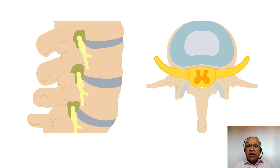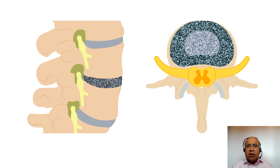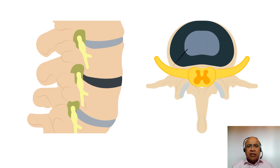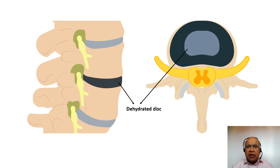Sometimes, for various reasons, the disc suffers failure and becomes dehydrated. Good discs have the ability to attract water and are well hydrated. A disc that has failed loses that ability, and the water content becomes less — this is called a dehydrated disc, or sometimes a degenerate disc. The term 'degenerate' may not be ideal, as it implies old age, but even young people can have dehydrated discs. Please note that drinking water will not correct the situation.